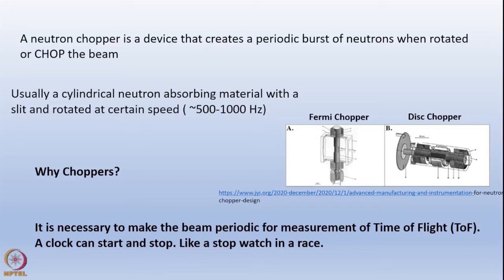In the case of pulse neutron sources, such as a spallation neutron source, there are a fixed number of pulses per second. For example, the ISIS neutron source at Rutherford-Appleton Laboratory in the UK has a 50 Hz beam - the proton hits a target 50 times per second generating the neutron beam. So why do you still need a chopper? Because the chopper can allow a selected band of neutrons to get through to the respective beam line.